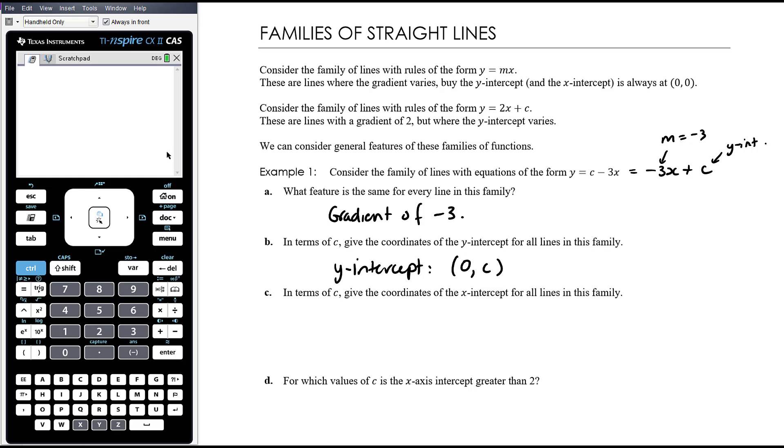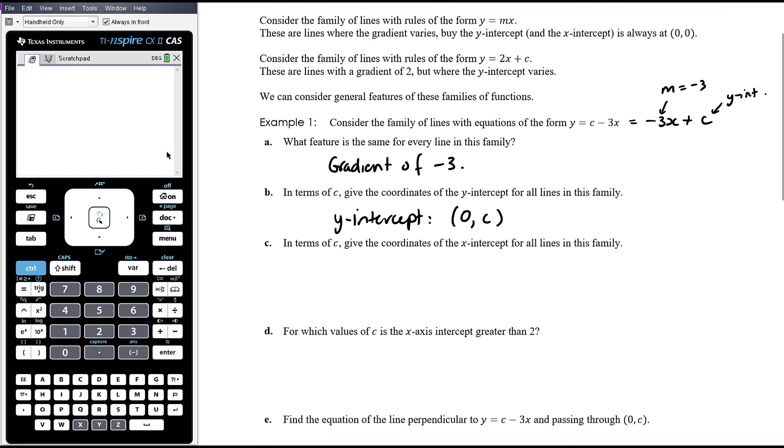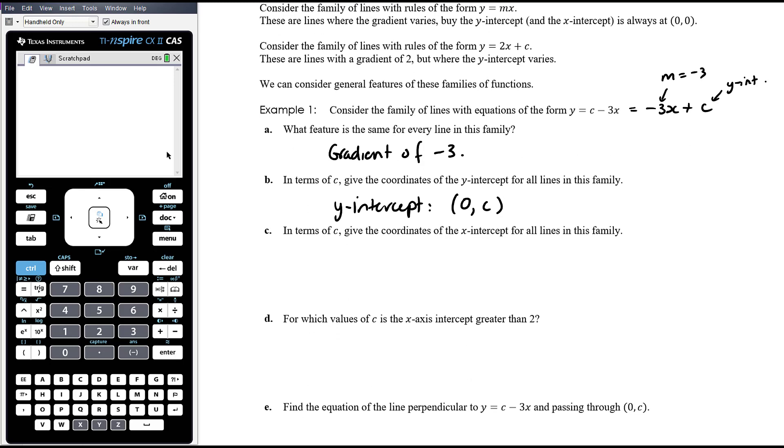In terms of c, give the coordinates of the x-intercept for all lines in this family. So for our x-intercept, we're going to let y equals 0. That's what I tried to do before. Now, we're not solving for c. We're finding the x-intercept. We're solving for x. And the answer we get will have c in it. So this means that if we add 3x to both sides, 3x equals c. And so x equals c divided by 3. And so therefore, the x-intercept is, it asks for coordinates, is c divided by 3, 0.